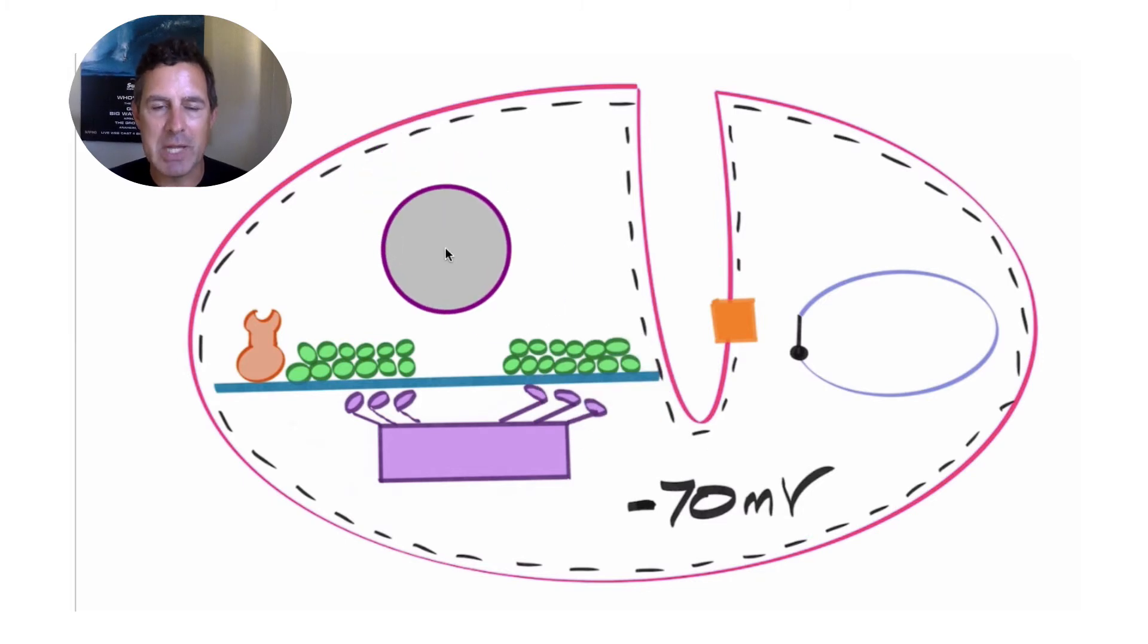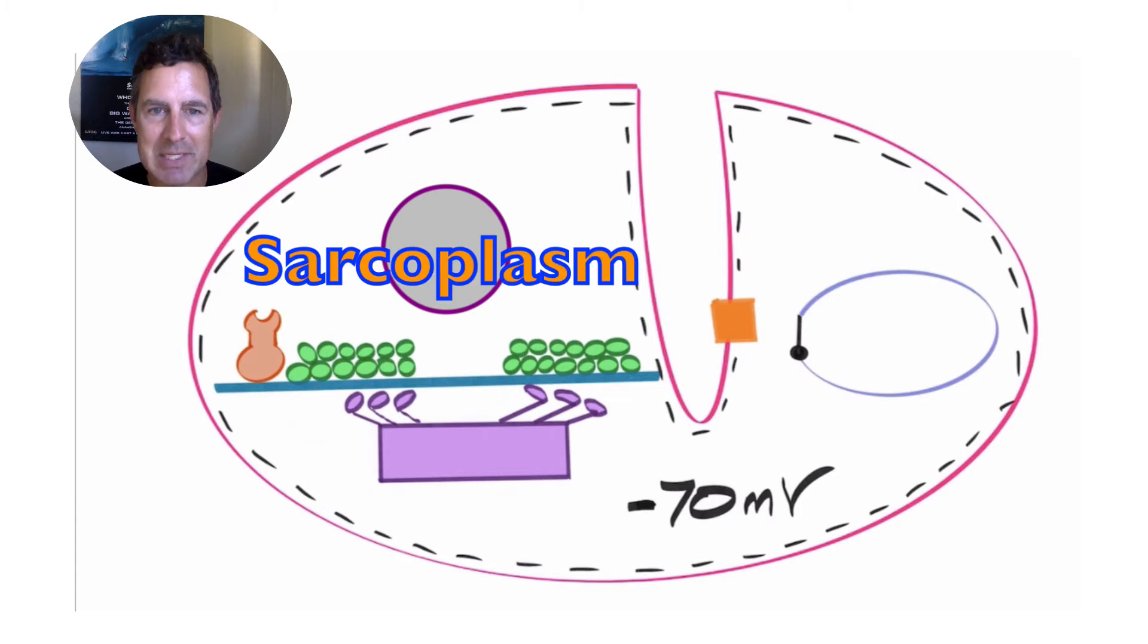The cytoplasm of a muscle cell is known as the sarcoplasm. Cytoplasm and sarcoplasm are the exact same thing. They are the space bound by the cell membrane, within the cell membrane.